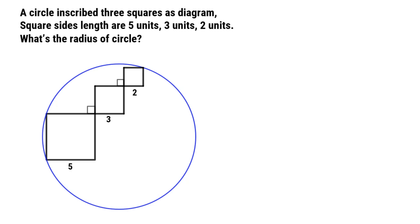If we want to find radius of any circle, we must find the center point of circle. Let's connect the three diagonals one by one. Very angles all are 45 degrees, so we can conclude the three diagonals are collinear.